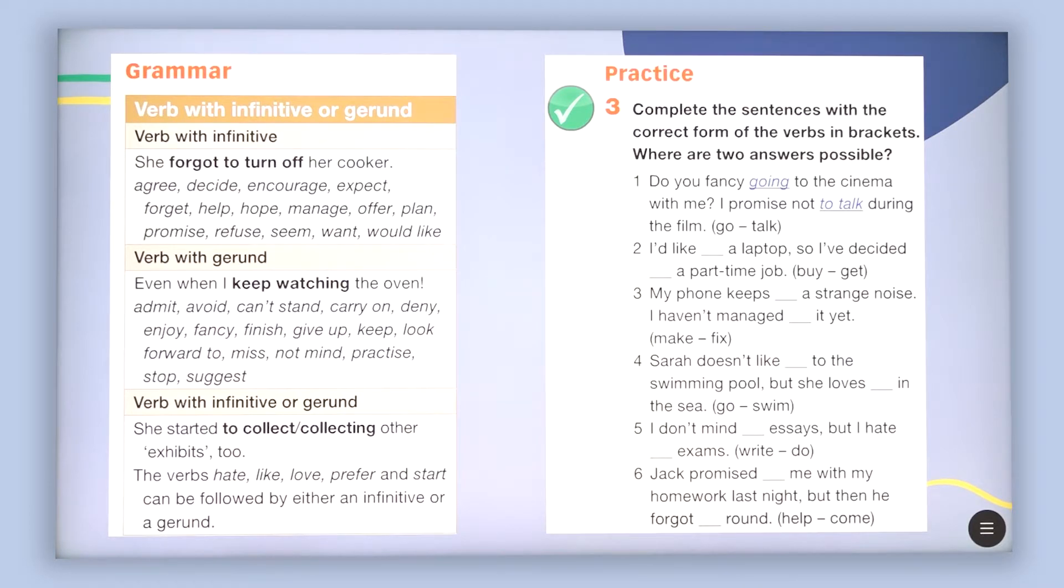She started to collect or collecting other exhibits too. So it means that you are going to have also verbs which are used with infinitive or the gerund. The verbs hate, like, love, prefer and start can be followed by either an infinitive or a gerund.